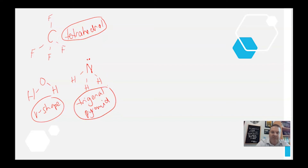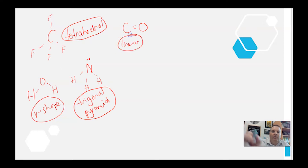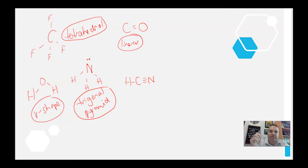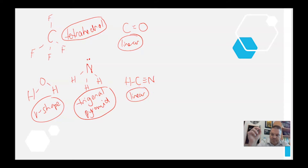You get a trigonal pyramid shape for ammonia — that one is trigonal pyramid. The next one was carbon monoxide: carbon with a double bond to oxygen, that's linear. Then hydrogen cyanide: a hydrogen attached to a carbon and then a triple bond to a nitrogen. All of these need full outer shells — hydrogen needs two electrons, carbon needs eight, nitrogen needs eight — and again that's a linear arrangement.